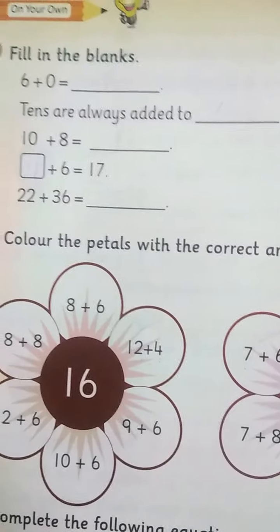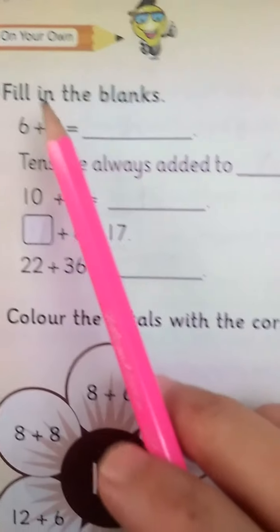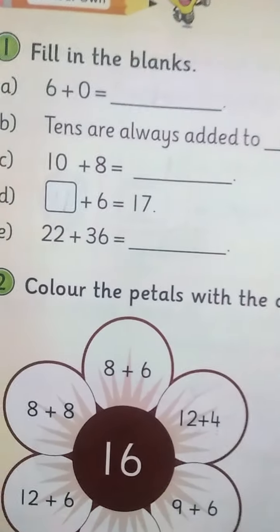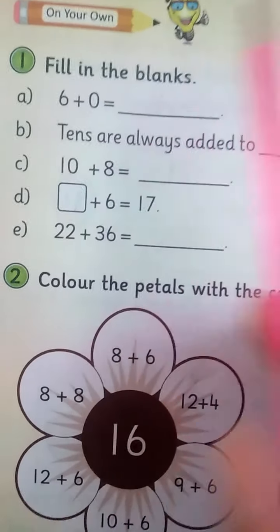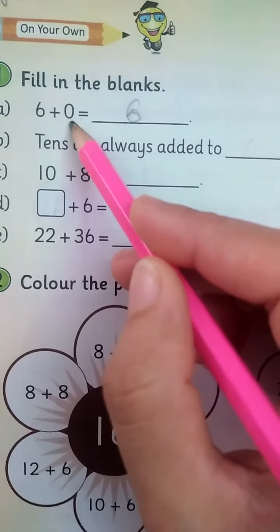Today we are going to do the exercise unit 2. The first question is fill in the blanks. 6 plus 0 is equal to 6. Here is 6 because 0 is nothing.